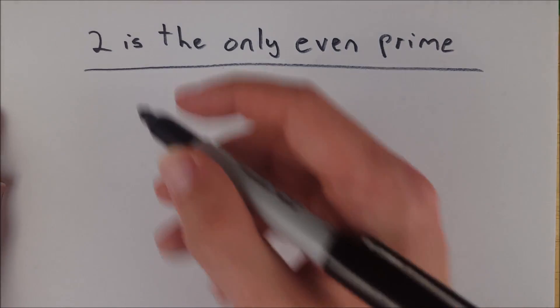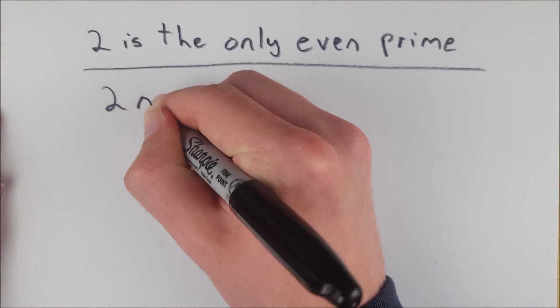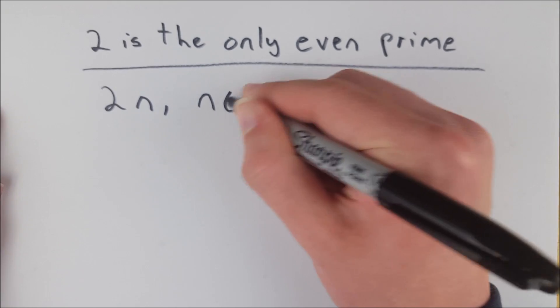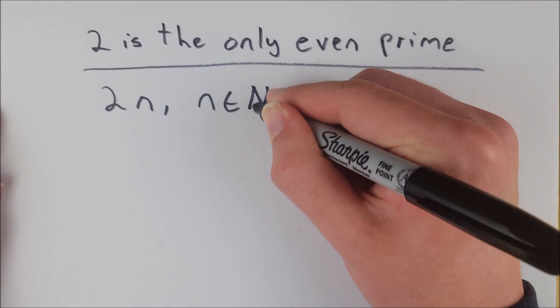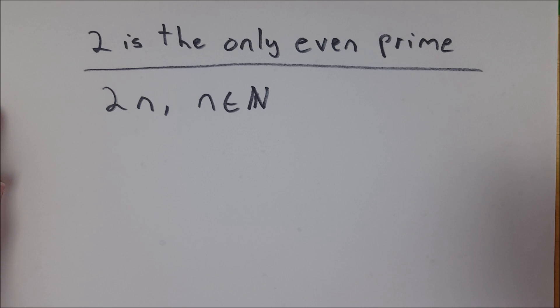So if we look at any other even number we can just call them 2n, where n is an element of the natural numbers, because all prime numbers have to be integers greater than 1. So this is going to give us all of the even integers greater than 1.